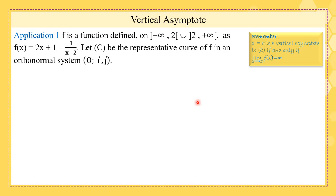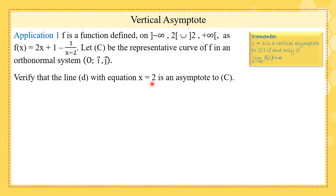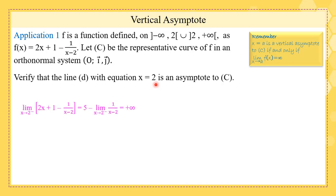Now let's see an application. This is the function and C is its curve. The question is to verify that x equals 2 is an asymptote to C — vertical, because x equals 2 is a vertical line. The limit as x tends to 2 minus of this function: if we substitute 2 we get 5 minus the limit of this quantity at 2 minus, which is plus infinity. In fact, we have 1 over 0 minus.